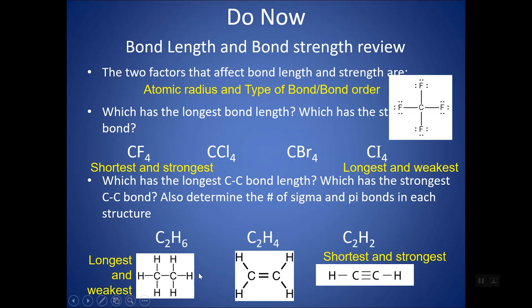To review sigma and pi bonds: every single bond is a sigma, so C2H6 would have seven sigma bonds. A pi bond occurs in multiple bonds — in any multiple bond you have one sigma and the rest are pi. C2H4 has five sigma and one pi. C2H2 has three sigma and two pi.